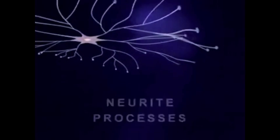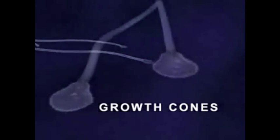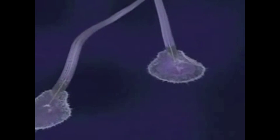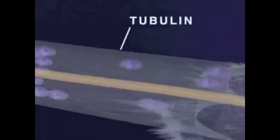At the end of each neurite is a growth cone where structural proteins are assembled to form the cell membrane. Two principal proteins involved in growth cone function are actin, which is responsible for the pulsating motion seen here, and tubulin, a major structural component of the neurite membrane.